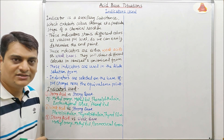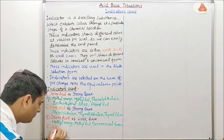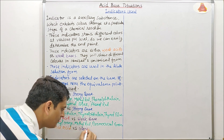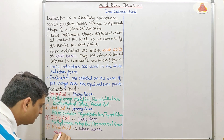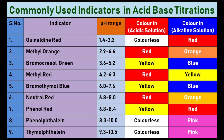For weak acid versus weak base titration, we will use mixed indicators. A list of important indicators with their pH range and respective colors in acidic and alkaline medium is visible on your screen. You can take a screenshot of this list for your further use.